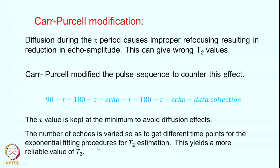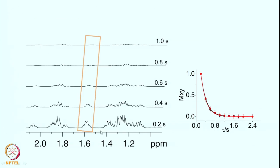This yields a more reliable value of T2. In the experimental demonstration, you have the normal 1D spectrum and then spectra collected at 0.2 seconds, 0.4 seconds, 0.6 seconds, 0.8 seconds, and 1.0 seconds total tau values. The tau is kept very small to remove diffusion effects, and the total number of echoes is adjusted to get these different time points. Fitting the intensities of individual transitions gives a T2 value, and different transitions show different decay rates corresponding to their different T2 values.